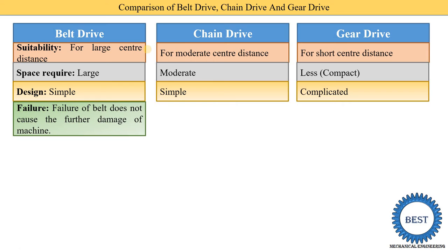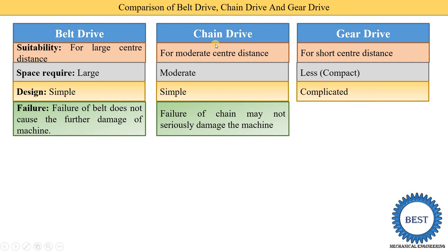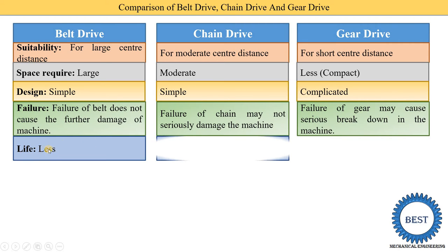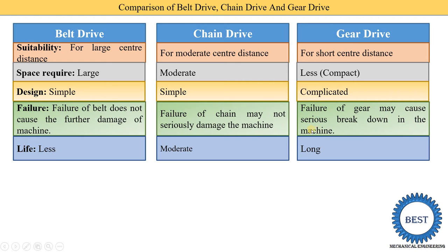The next point is the chances of failure. Failure of a belt does not cause further damage to the machine — if the belt fails, power is not transmitted from the driving shaft to the driven shaft, but there is no chance of machine damage. Failure of a chain may not seriously damage the machine either. However, failure of a gear may cause serious breakdown in the machine. Life of belt drive is less, life of chain drive is moderate, and life of gear drive is very long.